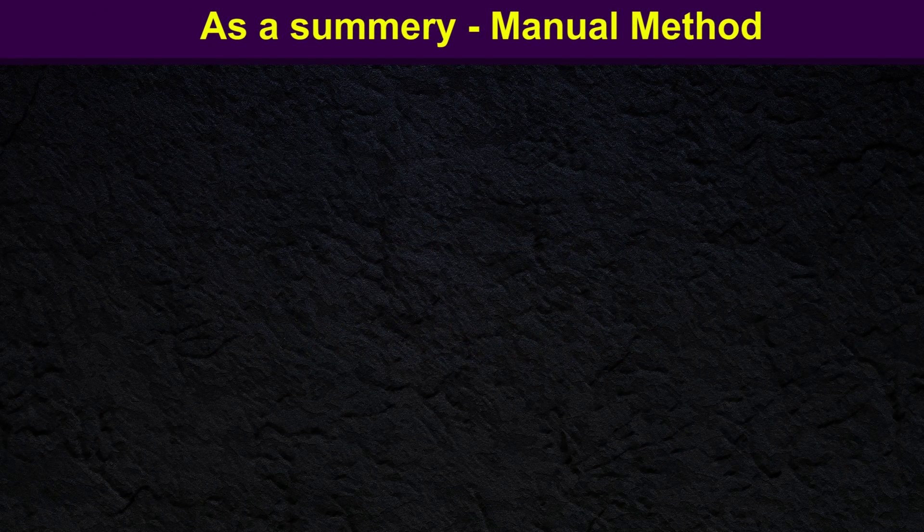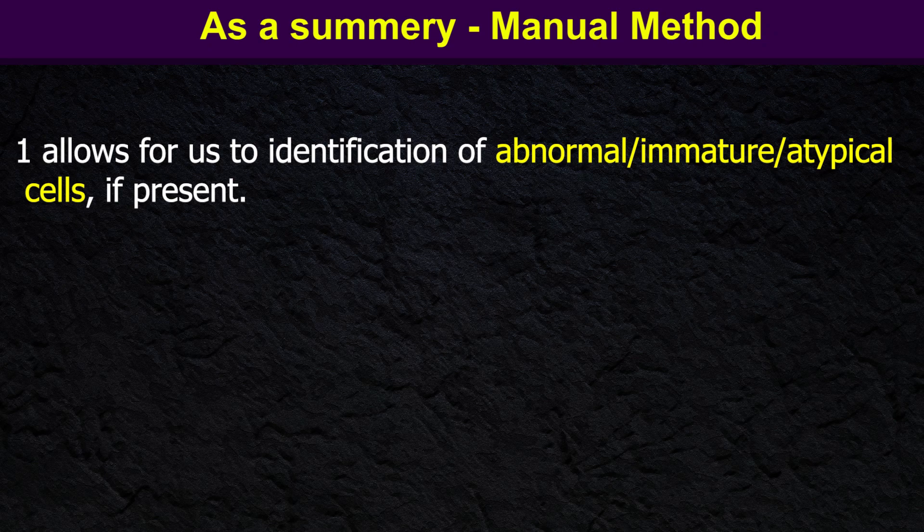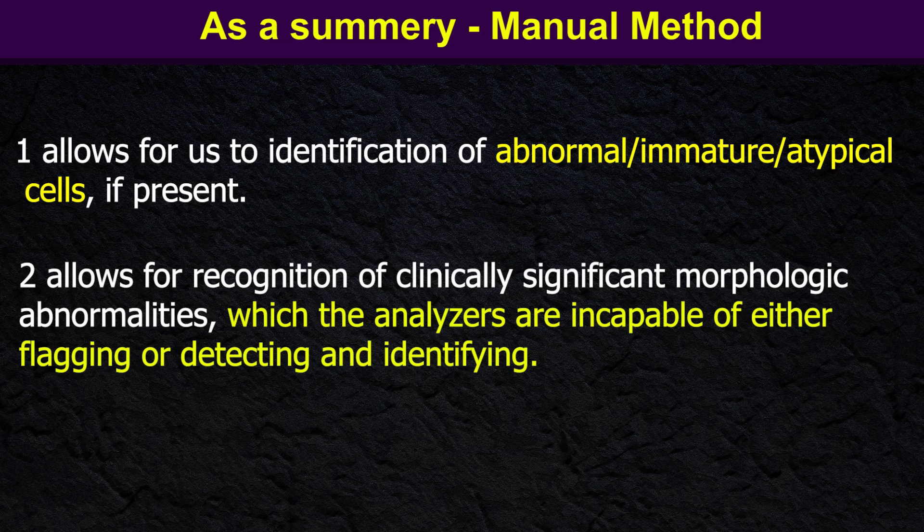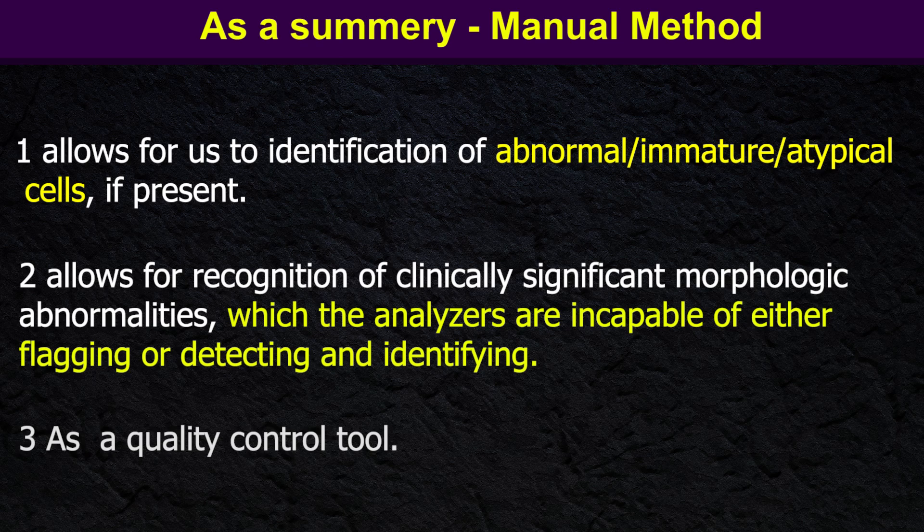As a summary, manual count and blood smear scanning allow for the identification of abnormal, immature, or atypical cells if present, and recognition of clinically significant morphologic abnormalities which the analyzers are incapable of flagging, detecting, or identifying. Also, we can use it as a quality control tool.